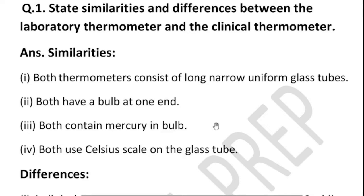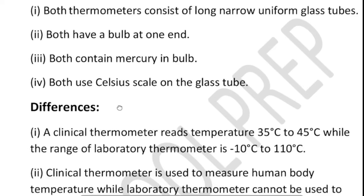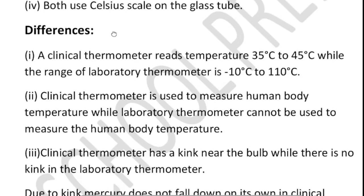The mercury in the bulb contracts and expands with slight changes in temperature. Both use the Celsius scale on the glass tube. Now for differences: a clinical thermometer reads temperature between 35 to 45 degrees Celsius.